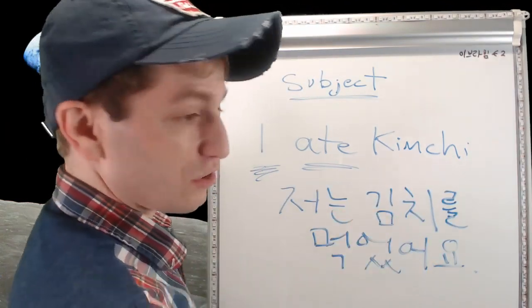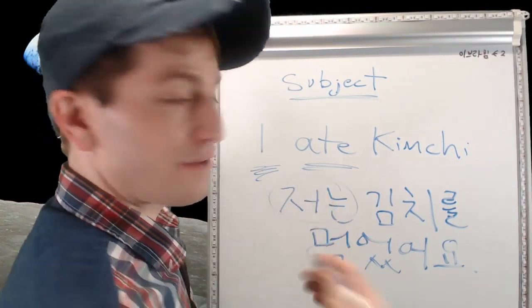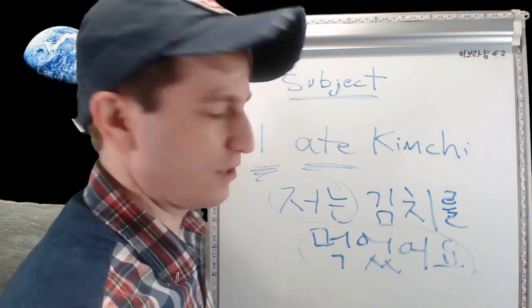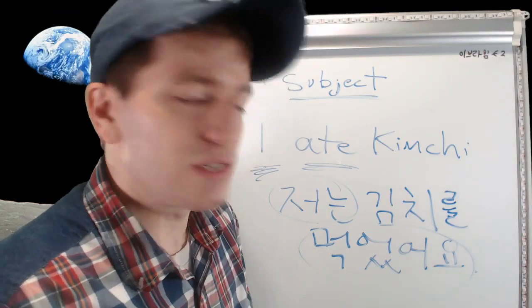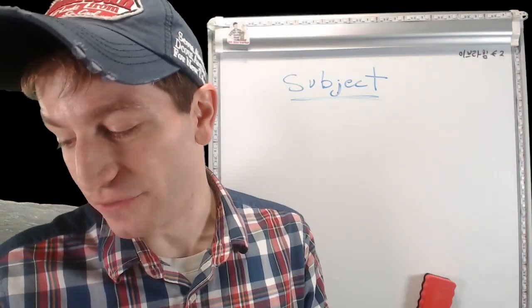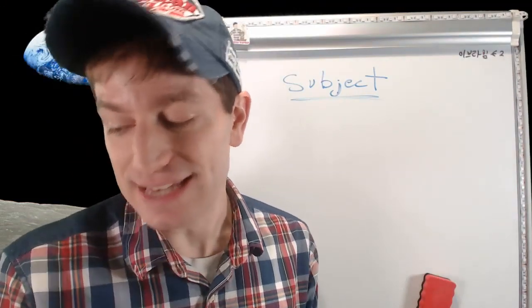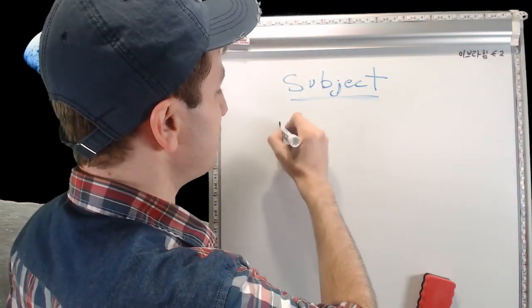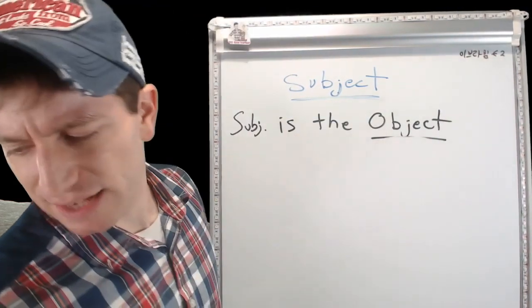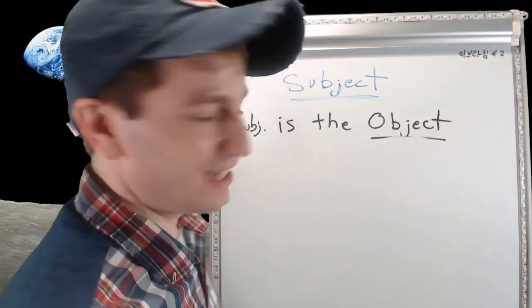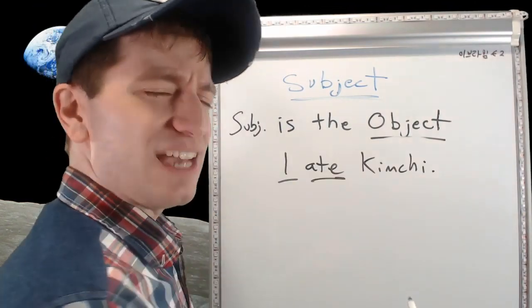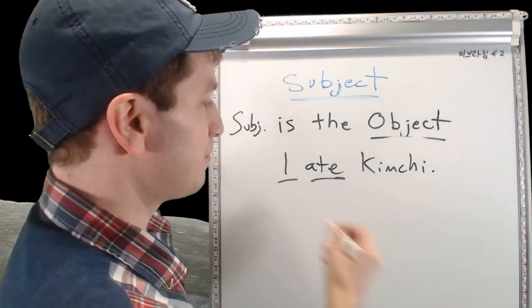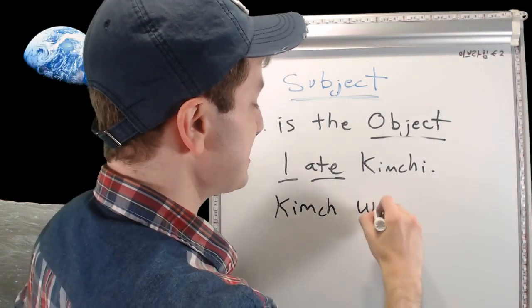You have a subject and you have a verb, and who or what does that verb? The subject. But there are sentences where that doesn't happen. Passive voice, however, is when the subject of a sentence is not the one doing the action, but is the object of a verb. Instead of saying 'I ate kimchi,' what if we made the subject the thing that the verb is doing something to? We would simply say 'kimchi was eaten.'